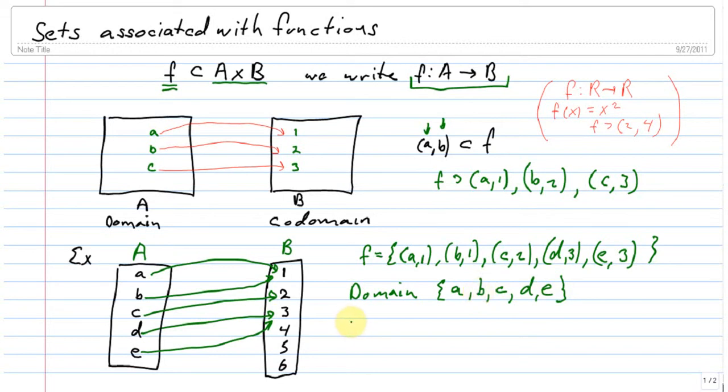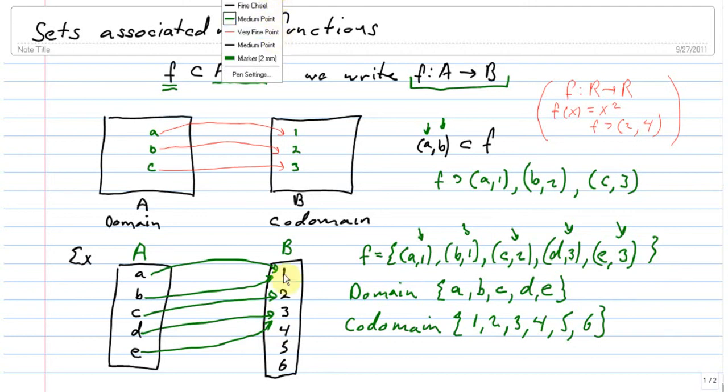And there's the codomain, which is the set {1, 2, 3, 4, 5, 6}. Notice that 4, 5, and 6 are hit by no arrows. In other words, they're not the second part of any ordered pair. Well, that's all right.